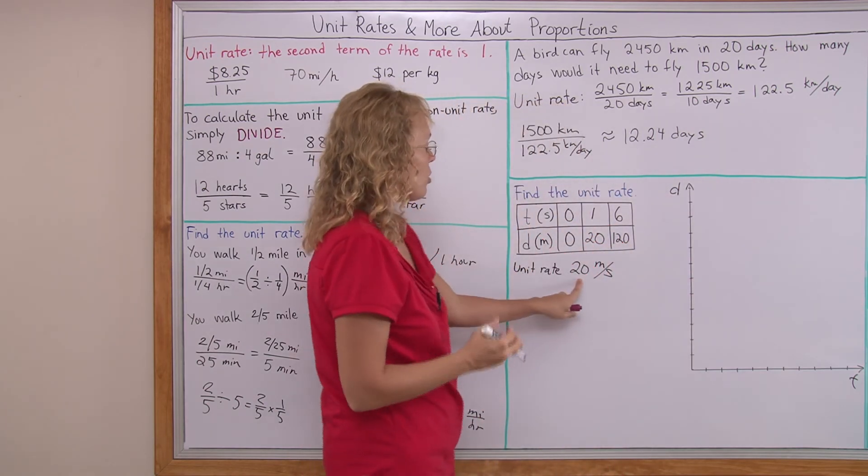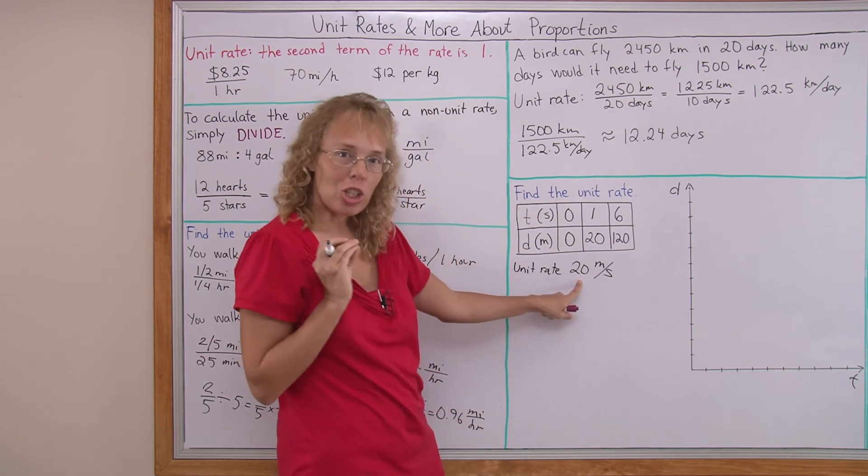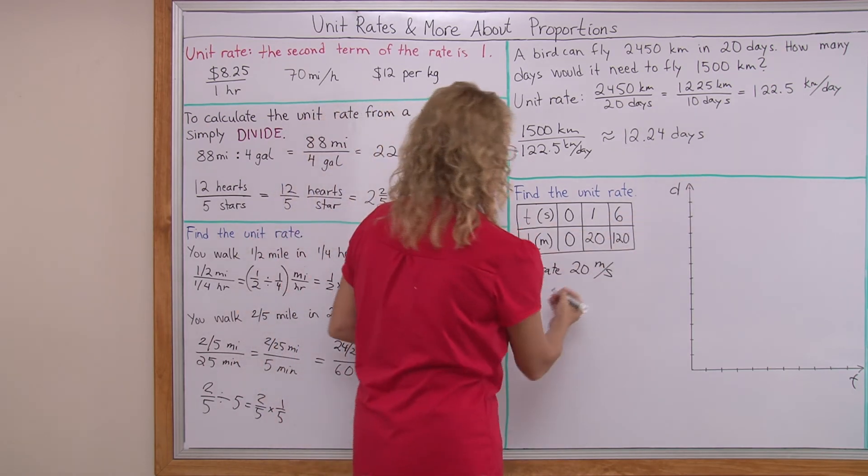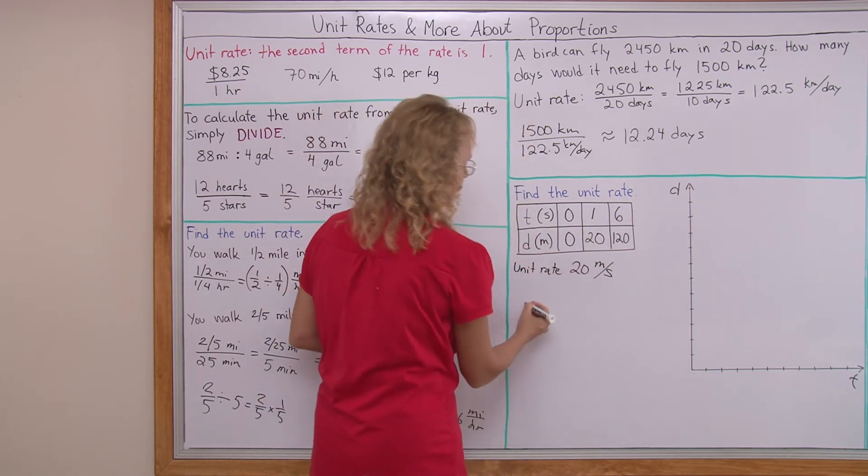And this unit rate becomes the slope of the line. And therefore, we will get an equation.